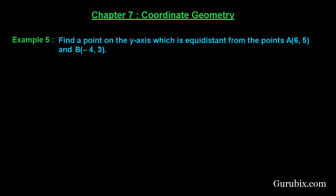Welcome, let us solve example number 5 of chapter 7. The example says find a point on the y-axis which is equidistant from the points A(6, 5) and B(-4, 3). Let us solve the example.